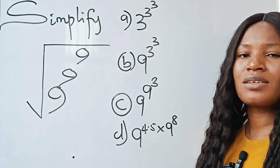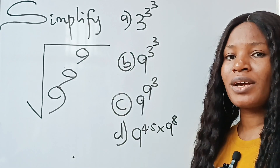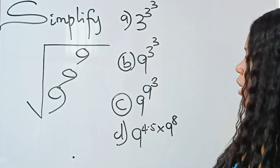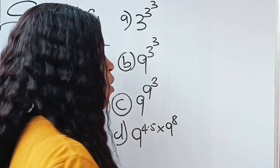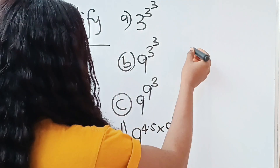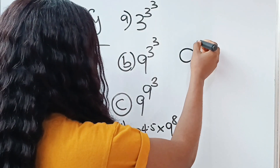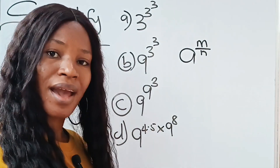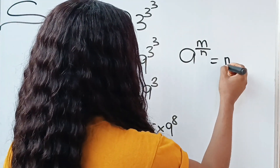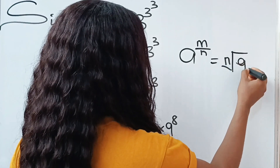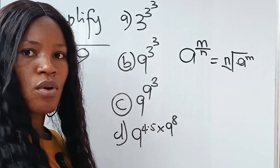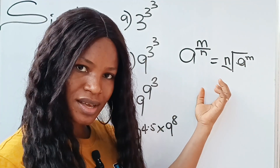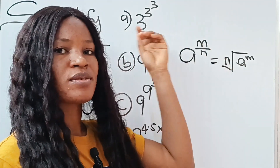Before we solve this, I need to introduce a law of indices — a law of exponents — that is going to make understanding this question very easy. The law of indices states that a to the power of m, raised to the power of one over n, is the same thing as the nth root of a raised to the power of m.